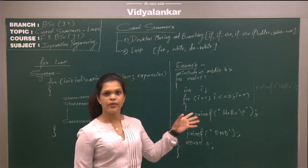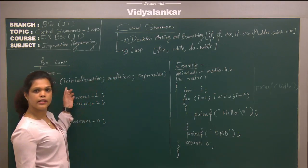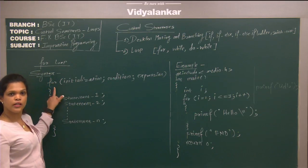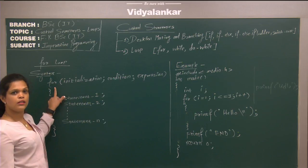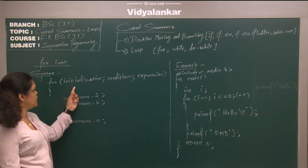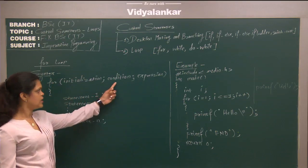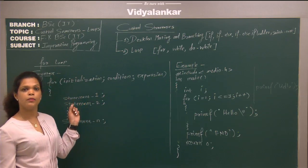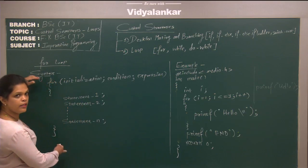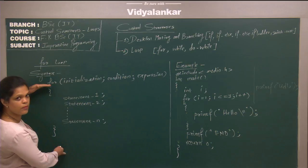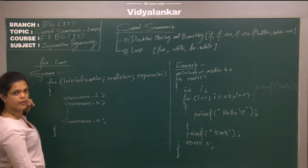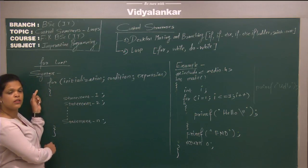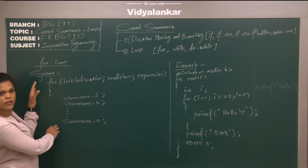First we will discuss the for loop. We will see the syntax of for loop. It starts with the keyword for, which must be written in lowercase. This keyword is followed by round brackets. There are three parts: the first part is the initialization, the second part is the condition, and the third is the expression. These three parts are separated by semicolons. Then you can write a group of statements which you want to execute repeatedly. All those statements must be enclosed in curly brackets. This is the syntax of for loop.